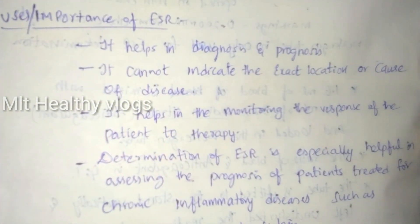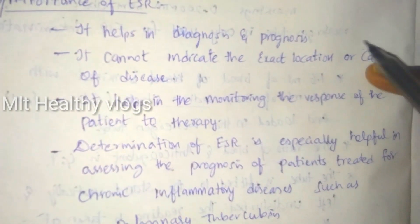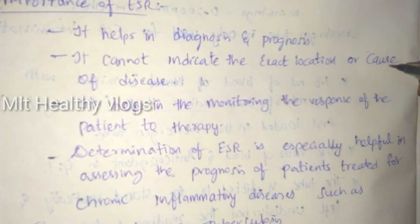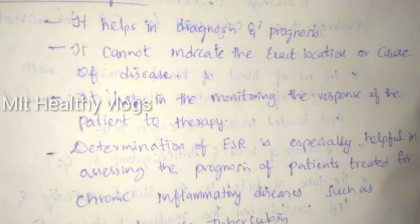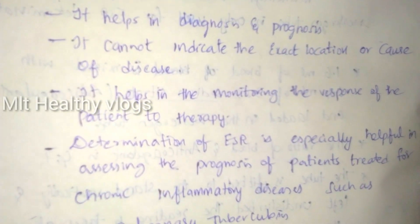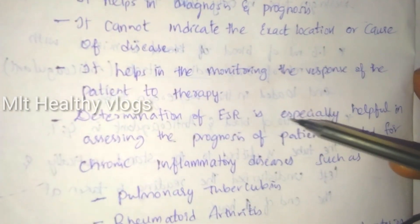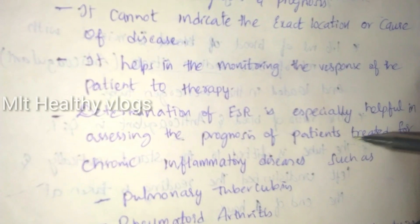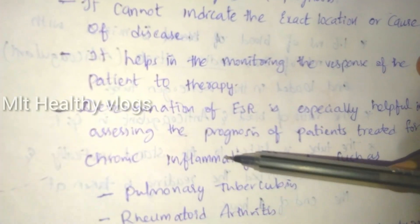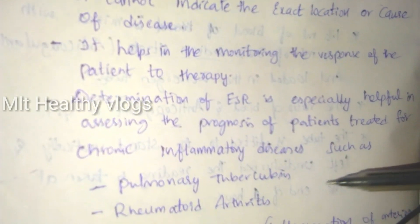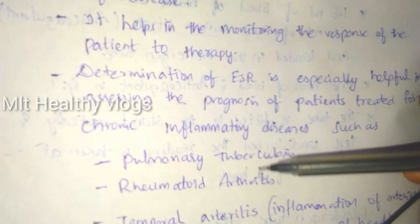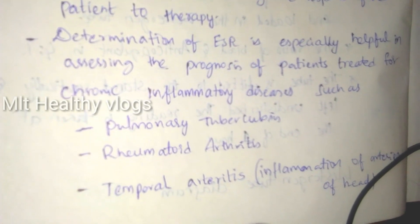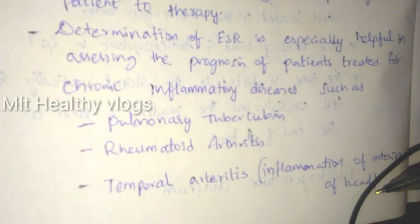The uses and importance of ESR: it helps in diagnosis and prognosis. It cannot indicate the exact location or cause of disease, but it helps in monitoring the response of a patient to therapy. Determination of ESR is especially helpful in assessing the prognosis of patients treated for chronic inflammatory diseases such as pulmonary tuberculosis, rheumatoid arthritis, and temporal arteritis — that is, inflammation of the arteries of the head.